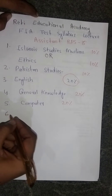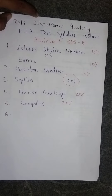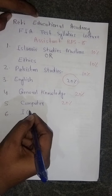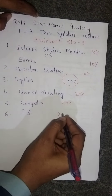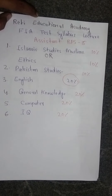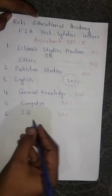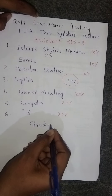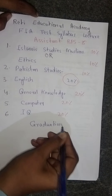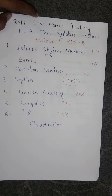The sixth and last subject is IQ — Intelligent Questions — which is also 20%. The difficulty level of these questions will be at graduation level. Inshallah, in the next video I will discuss the course outline for all these portions.